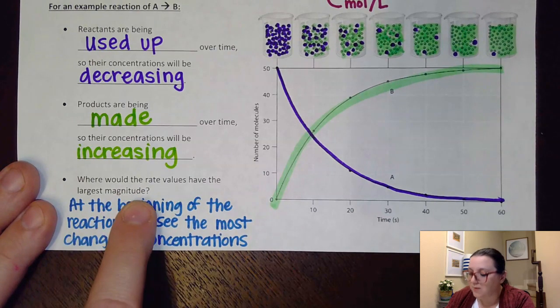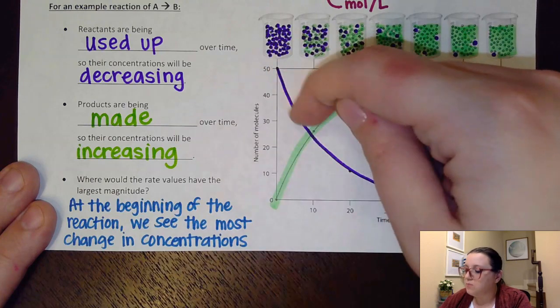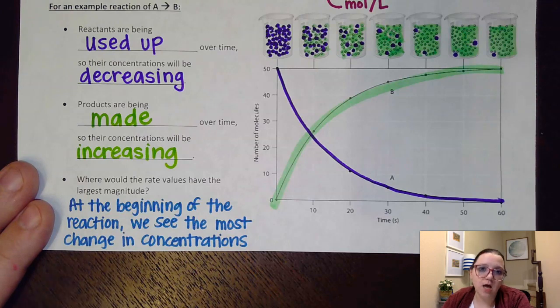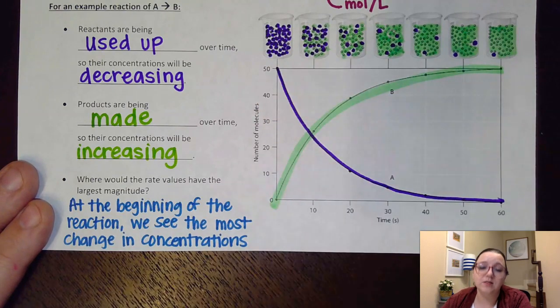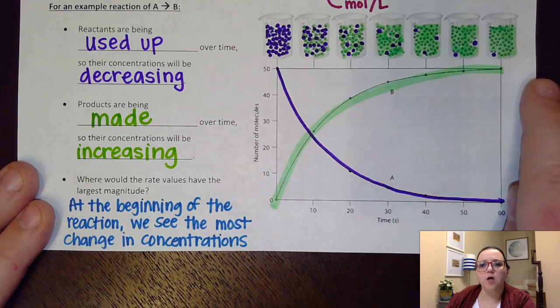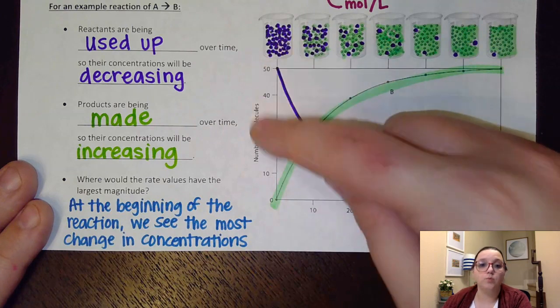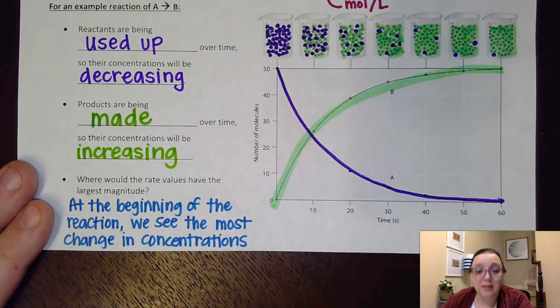So you notice that the rate values have the largest magnitude at the beginning of the reaction. That's where we're getting the most drastic changes in concentrations. Now that's important to remember because you'll see as we get further along into this unit that most of the time when we're doing rate calculations, we care about what the rate is doing at the beginning of these processes, because that's where we see the most change occurring. As this reaction gets further and further along, as that reaction is finishing up, we see less and less change occurring. And so therefore, we're not getting significant changes in concentrations anymore. So it's a lot harder to notate rate at that point. So most of the time on these problems, we care about an initial rate. What's our rate doing here at the beginning of this process?